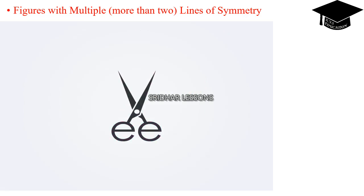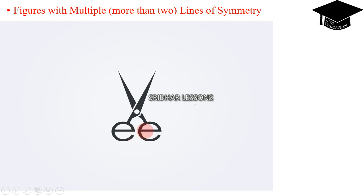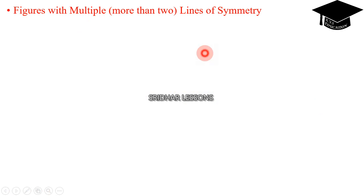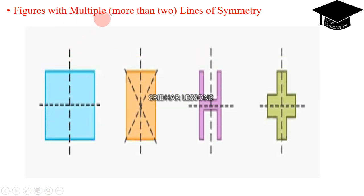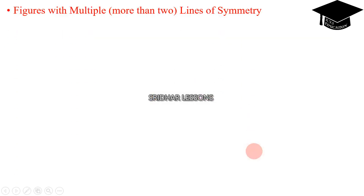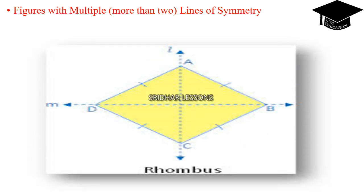Observe carefully how it is going to change. See the picture — the letters E and E. This is one more example for figures with multiple, that means more than two lines of symmetry. These are the examples with two lines of symmetry.